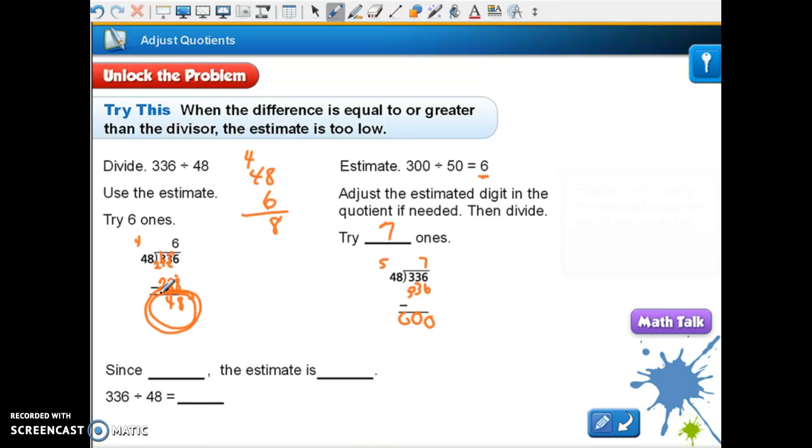So since on this one, since 48 is equal to 48, the estimate is too low. So 336 divided by 48 is 7.